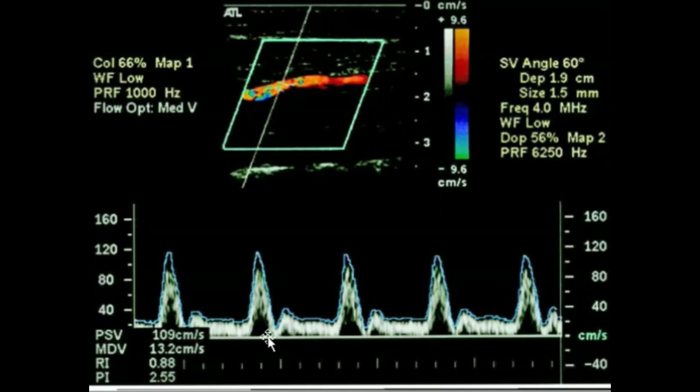Based on the envelope, a numeric output is provided at the bottom left showing the peak systolic velocity, which is 109 centimeters per second, and minimum diastolic velocity, which is 13.2 centimeters. Many ultrasound machines automatically calculate the resistivity index and also the pulsatility index.